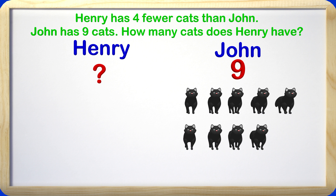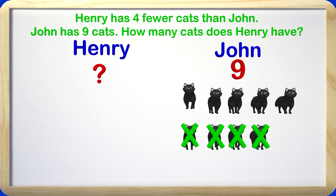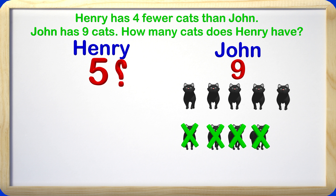Here are 9 cats, which represent how many John has. Henry has 4 fewer, so we will cross 4 of them out. Now we can count the remaining cats: 1, 2, 3, 4, 5. The answer is 5. Henry has 5 cats.